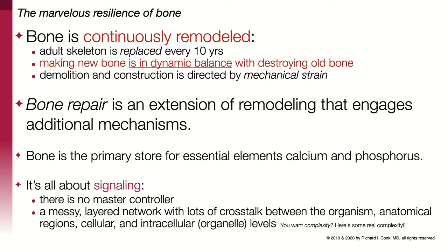An important quality of bone is that it's the primary store in the body for essential elements, notably calcium and phosphorus. Calcium is the most important element in the body — we only have about a kilogram of it, and most of it is stored in bone. It's absolutely essential to have calcium around for all of the contractile activities, both intracellular and extracellular, that make up the activity of the body. Bone's resilience really derives from signaling. There's no master controller — just a messy layered network with lots of crosstalk between the organism, the anatomical regions, and the cellular and intercellular activities involved in signaling that directs bone to be laid down and chewed up.